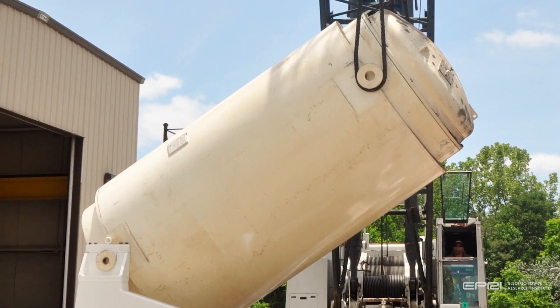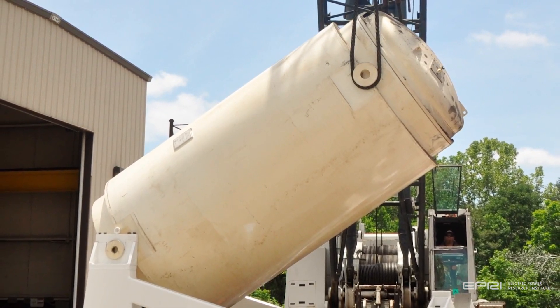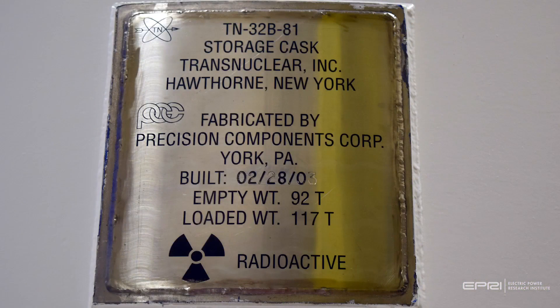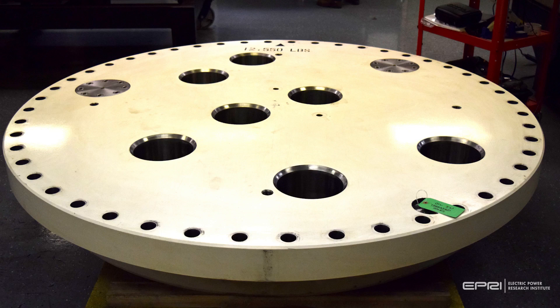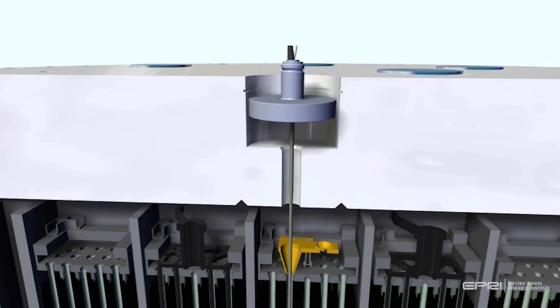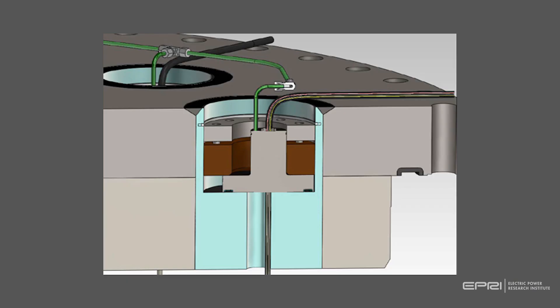To begin collecting data as quickly as possible, an existing cask that had already been fabricated but not placed in service was used. The existing cask was modified, including machining holes in the lid to install seven thermocouple lances. The thermocouple lances allow for measuring the temperature inside the cask from the outside, a difficult design challenge.